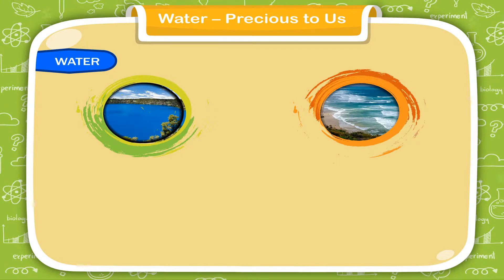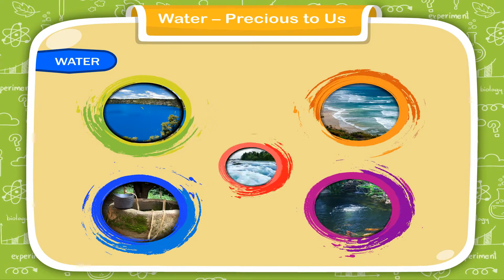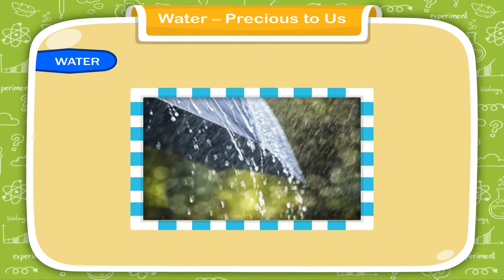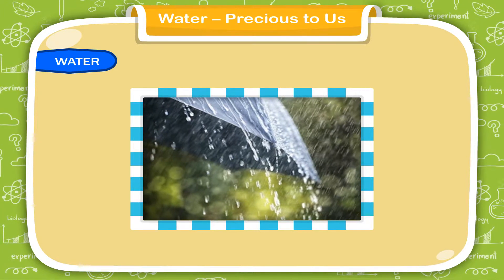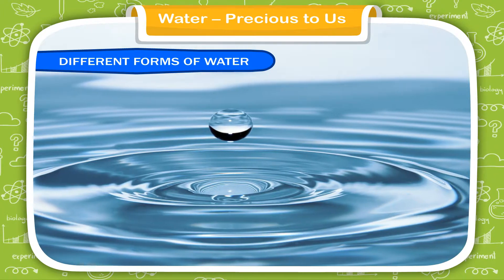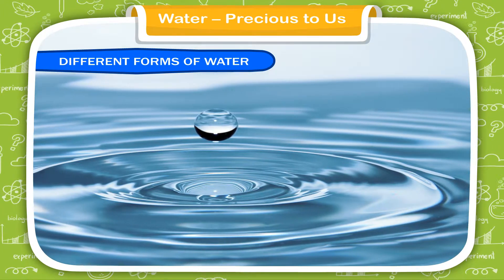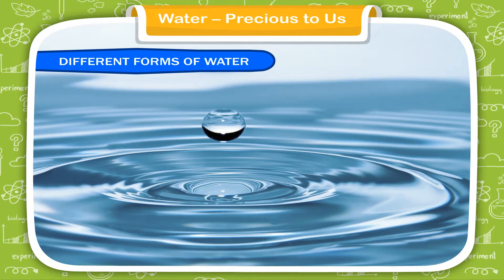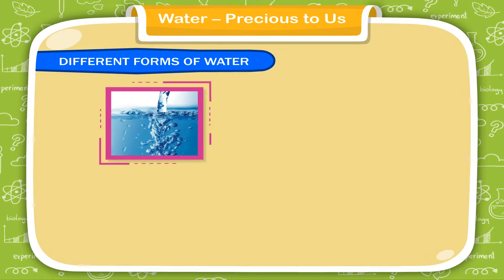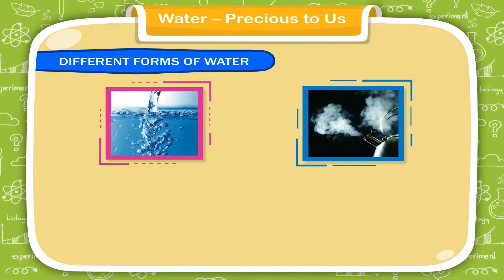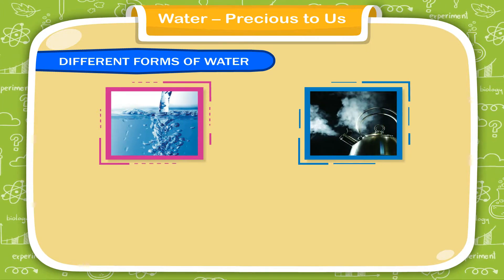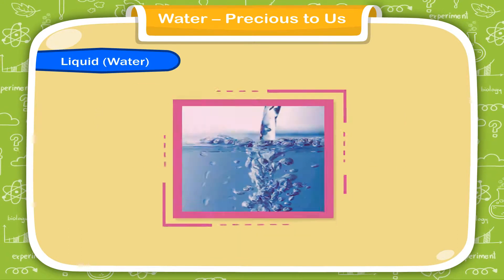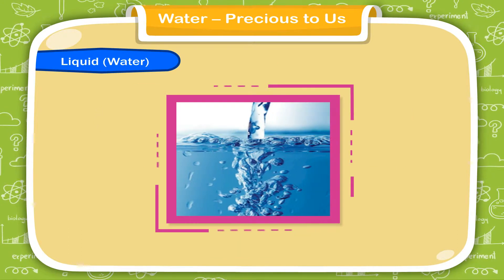Different forms of water: water is found in three states in nature — liquid water, which we drink; gas, which is water vapor; and solid, which is ice.